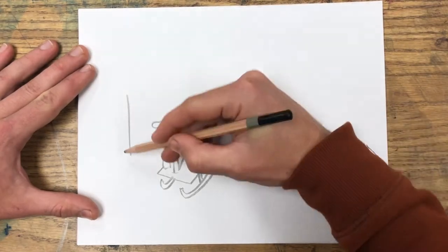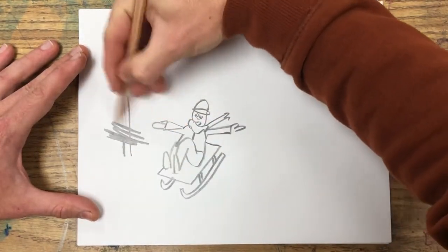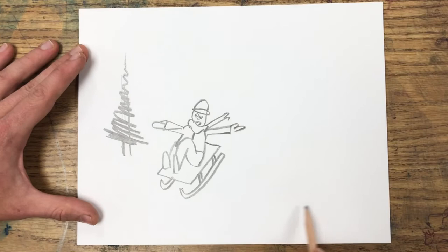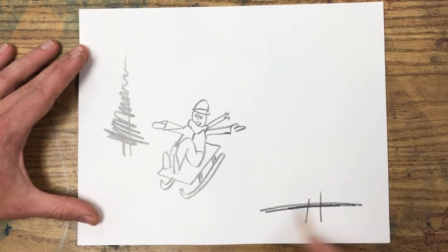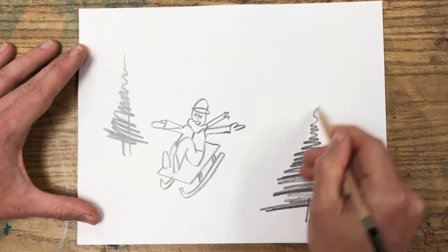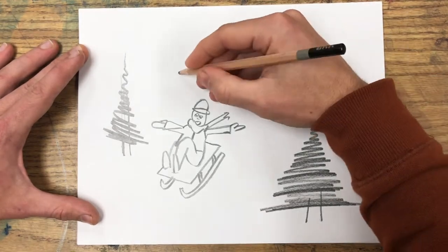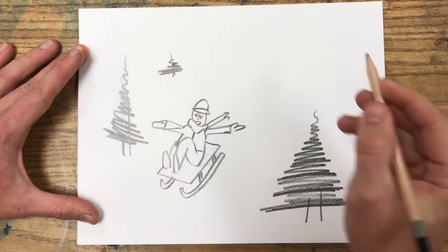And then around him, let's draw some trees. Remember that if trees are closer to you, they'll be bigger. So closer trees will be more towards the bottom and middle of the page, and then as you go up the page, the trees will get smaller as they go away from you.